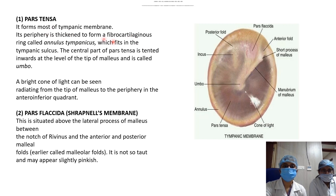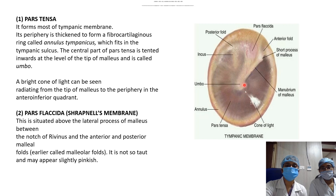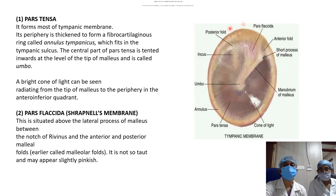The pars tensa forms most of the tympanic membrane. Its periphery forms a fibrocartilaginous ring called the annulus tympanicus, which fits into the tympanic sulcus — a groove in the tympanic bone. The central part of the pars tensa is tented inward at the tip of the malleus, forming the umbo. The pars flaccida, or Shrapnell's membrane, is situated above the lateral process of the malleus, between the notch of Rivinus and the anterior and posterior malleal folds. The part of the tympanic bone deficient of the annulus is the notch of Rivinus.